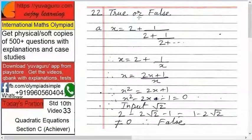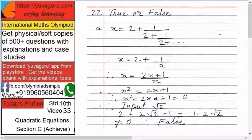Next is state true or false. Now, there are 3 to 4 sub-questions to this. If x equals 2 plus 1 upon 2 plus 1 upon... it goes on continuing. So, we have to check whether x is equal to 0 or not.